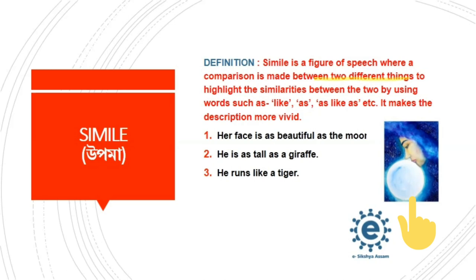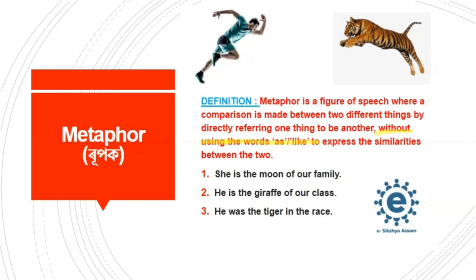The similarity between the two objects — the face and the moon — is their beauty. Instead of simply saying how beautiful she is, we say 'her face is as beautiful as the moon.' This way, we associate the moon's shining beauty with her face, and we start imagining her beauty by imagining the beauty of the moon.